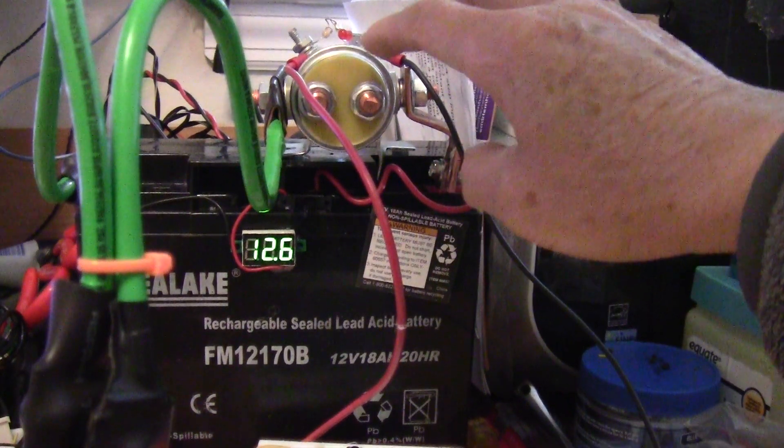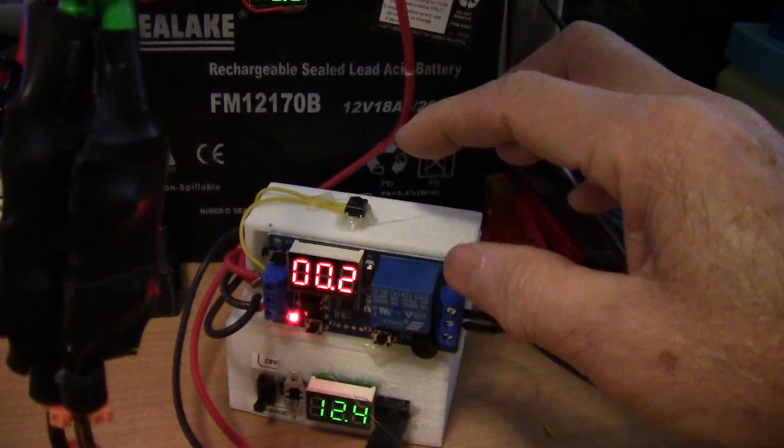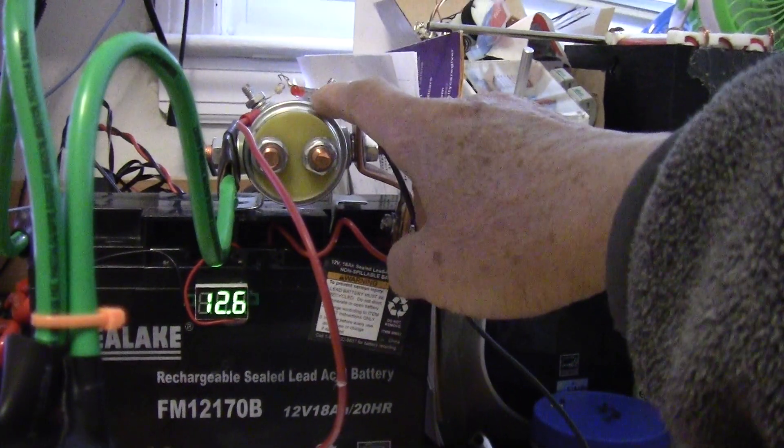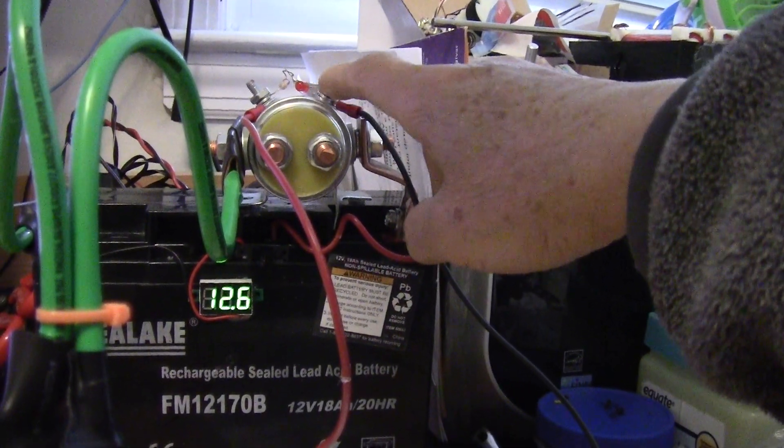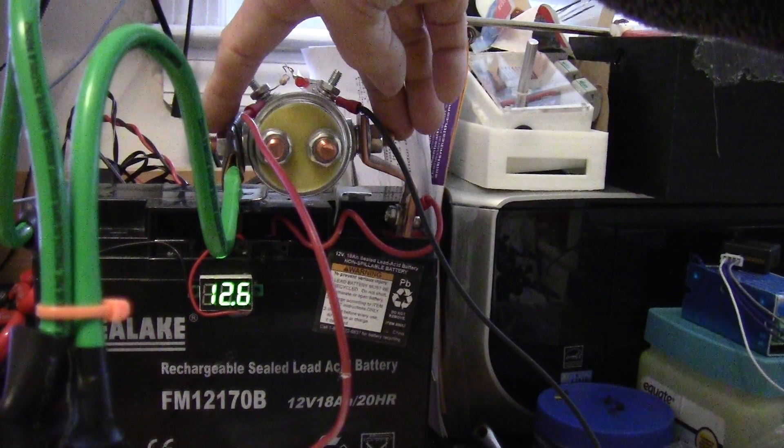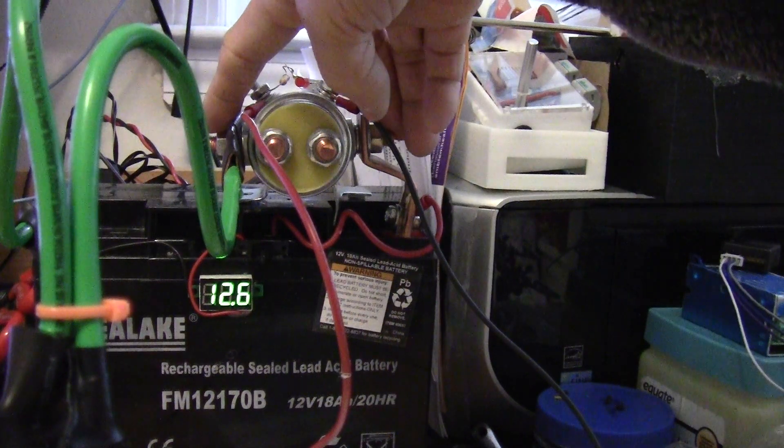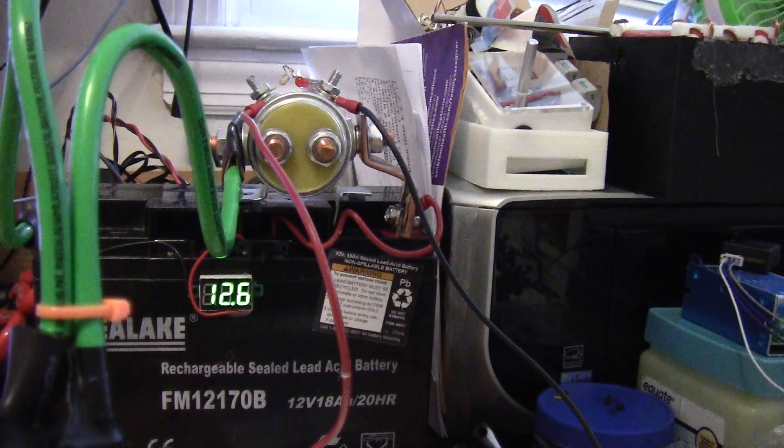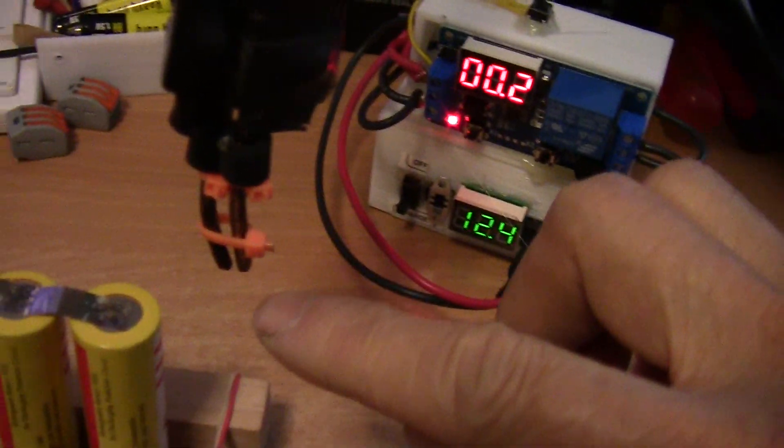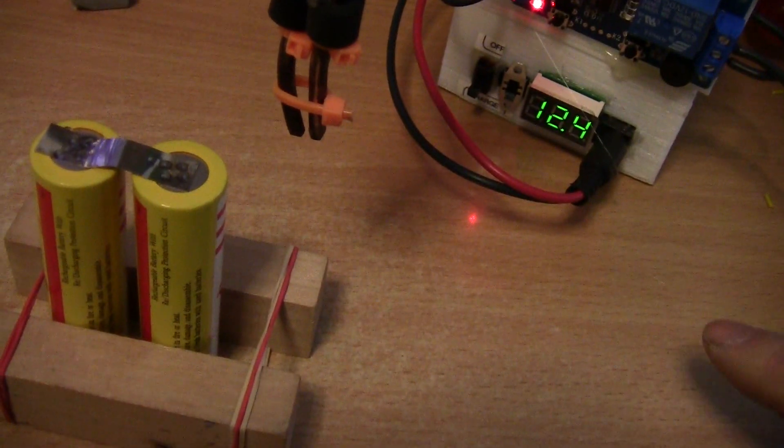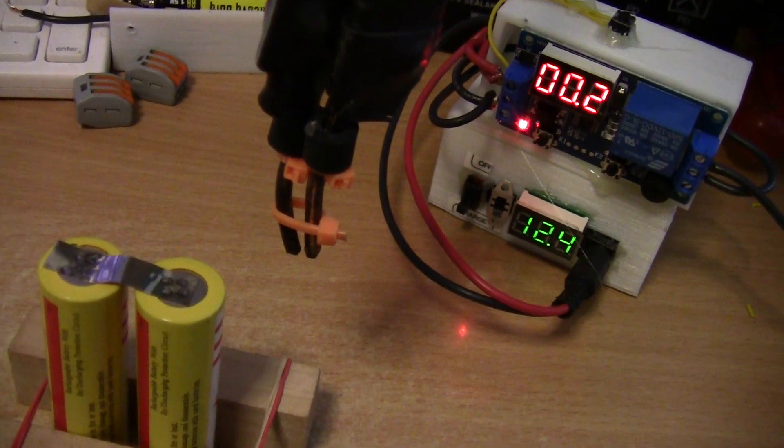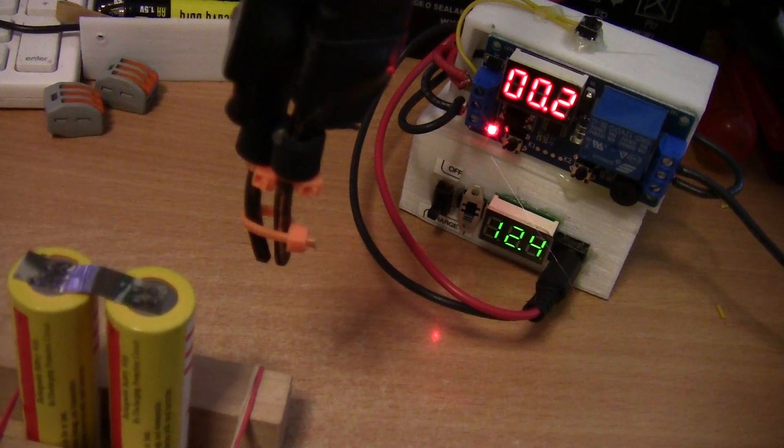So when the momentary switch is pressed, the timer sends current to the coil terminal, energizing it. Then the normally open terminal of the solenoid closes and supplies current to the electrodes, and then you have the spot welding taking place.